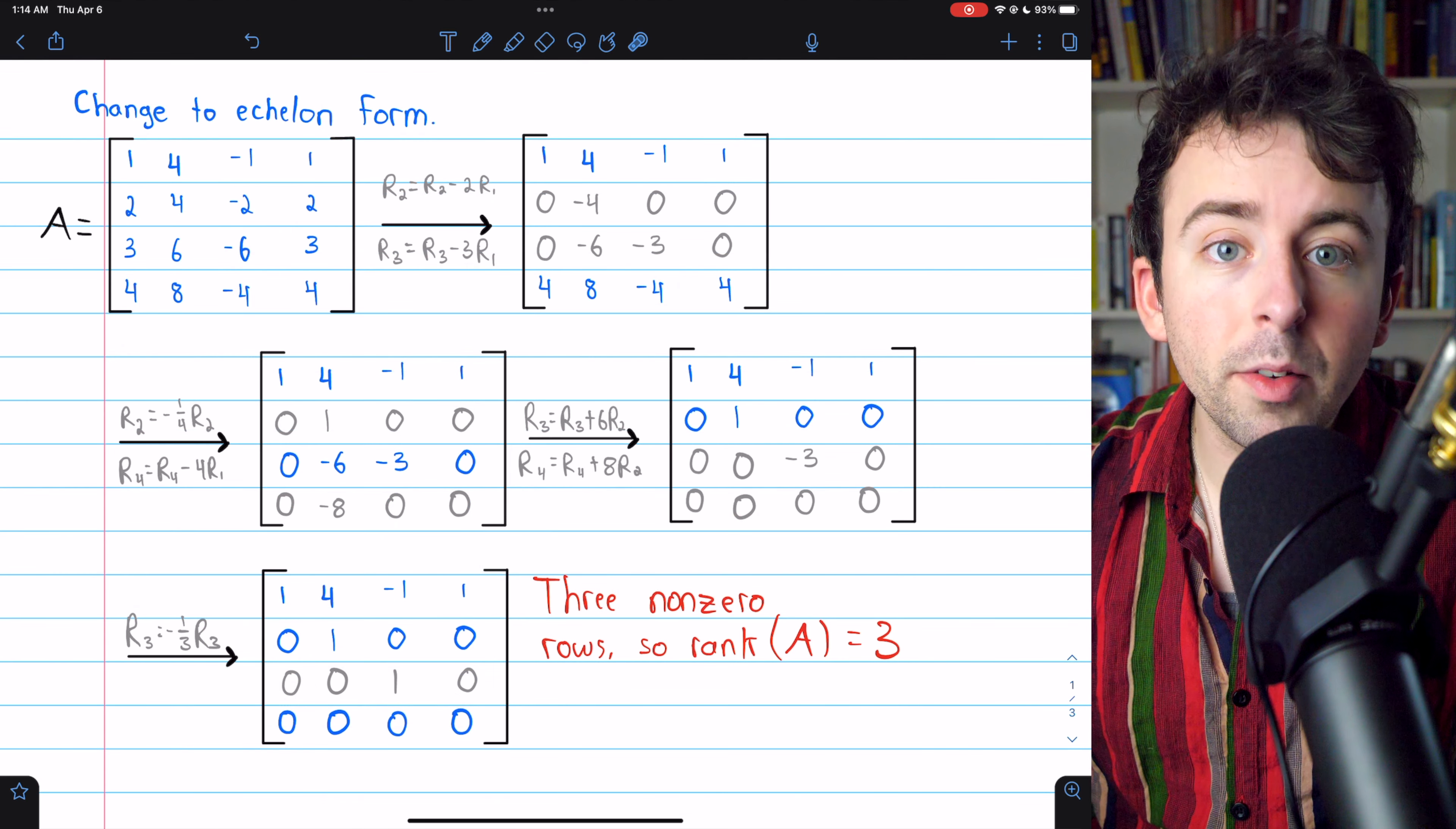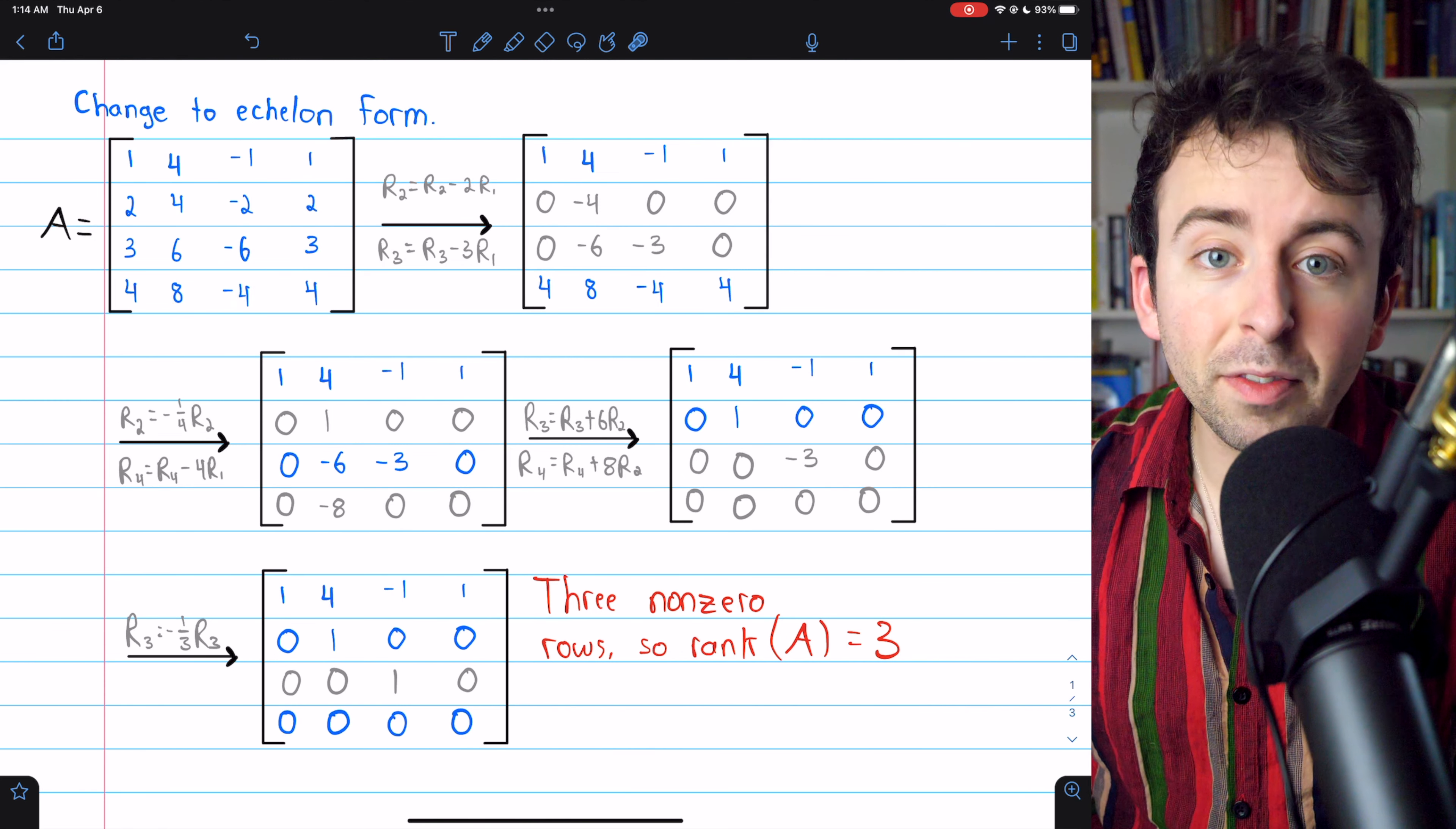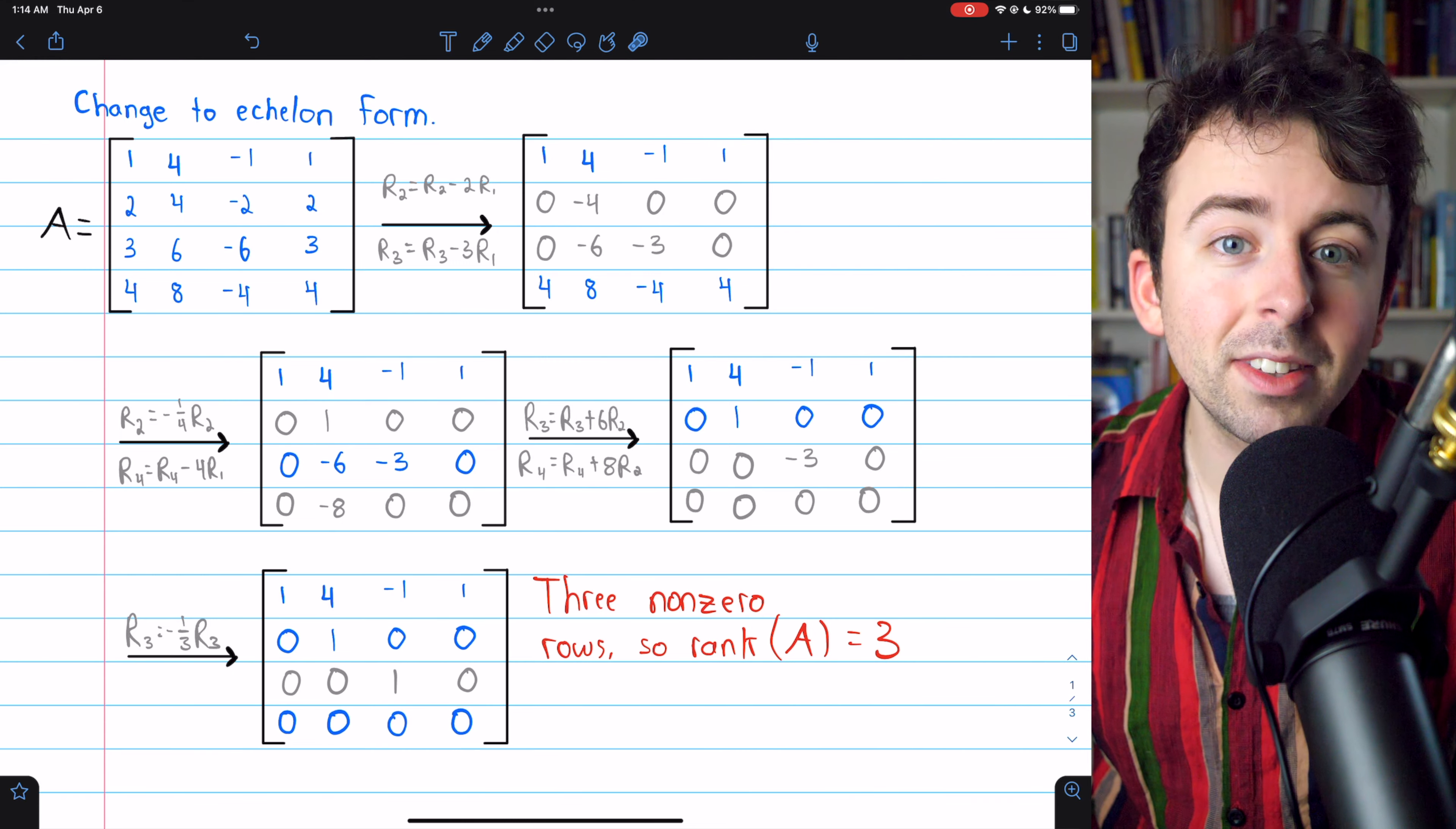So, that's an example of finding the rank of a four by four matrix. Hope it was helpful. I'll have some relevant links in the description to similar lessons I've done. Let me know in the comments if you've got any questions.